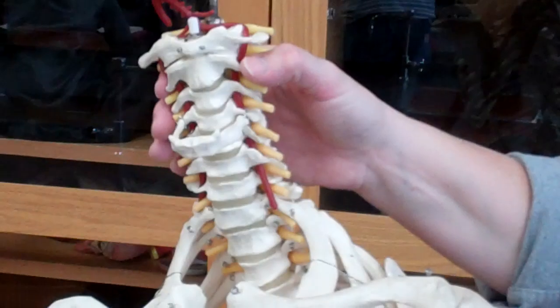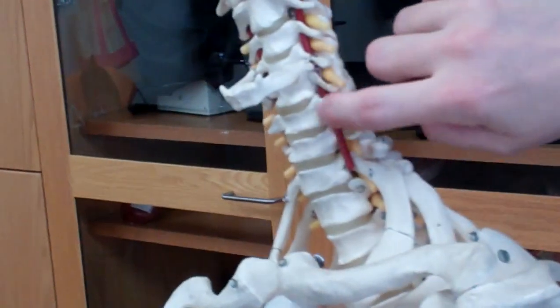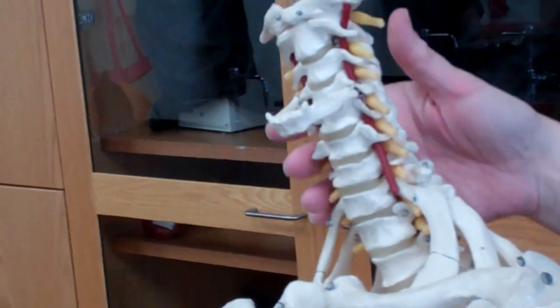Okay. And then the other one that we didn't cover on the previous models is the vertebral artery, which runs through the transverse foramen in the cervical vertebrae. So it's where this red rubber tube is running.